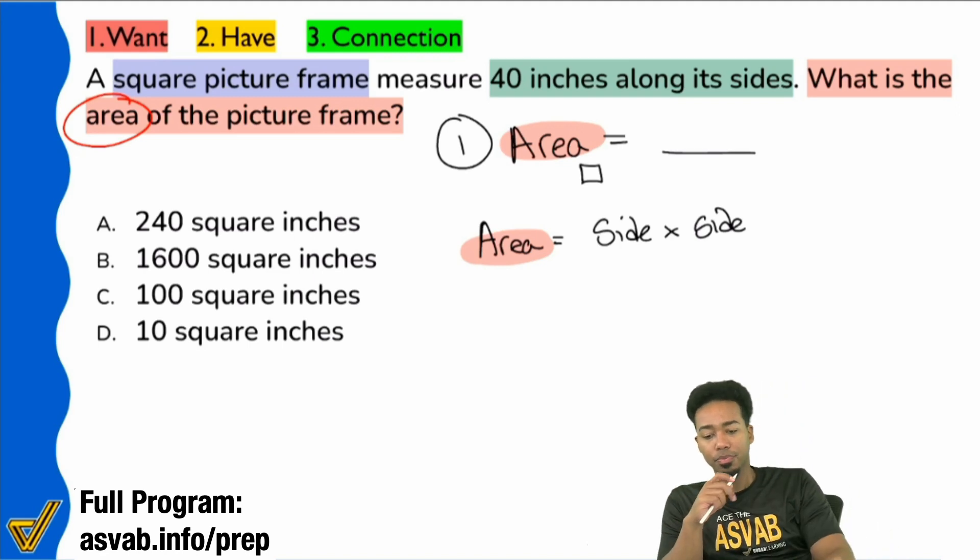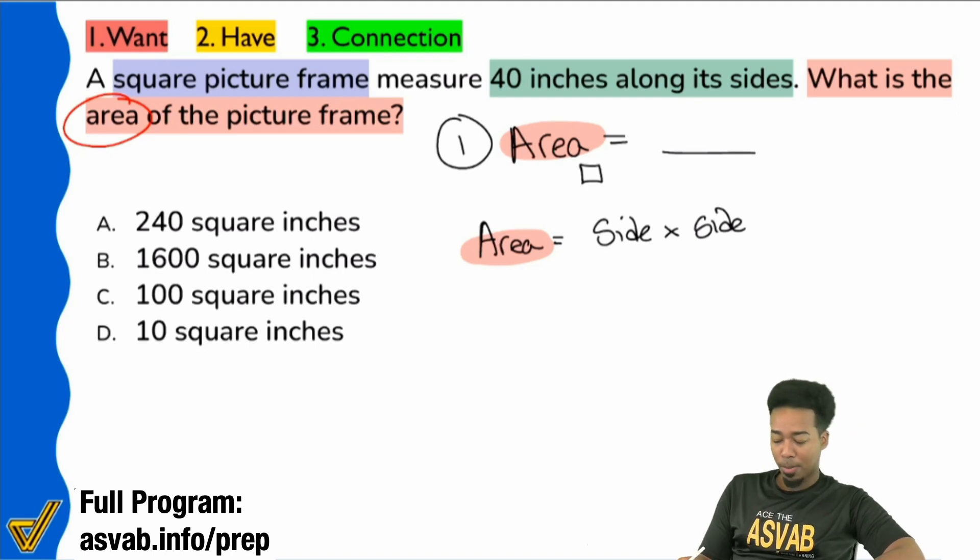Everyone, what does 40 inches along its sides mean? 40 inches along its sides does not mean side length. It doesn't. 40 inches along its sides means it's the sum of the sides. It measures 40 inches along its sides.